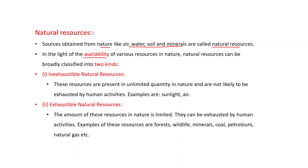Natural resources can be broadly classified into two kinds. First, inexhaustible natural resources, which are present in unlimited quantity in nature and are not likely to be exhausted by human activities — examples are sunlight and air. Second, exhaustible natural resources, whose amount in nature is limited and can be exhausted by human activities — examples are forests, wildlife, minerals, coal, petroleum, and natural gas.